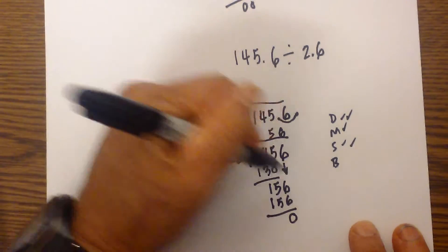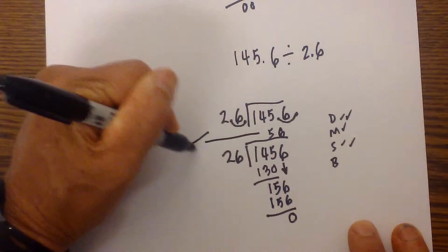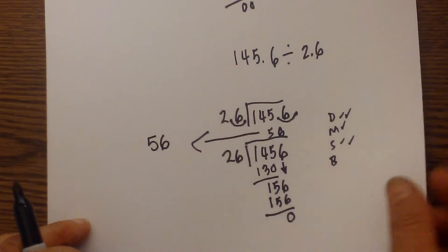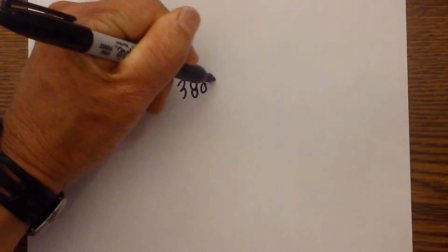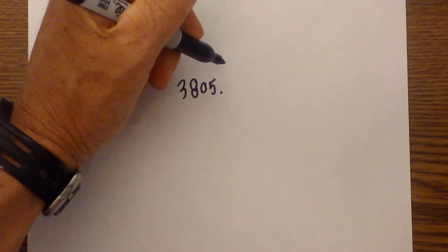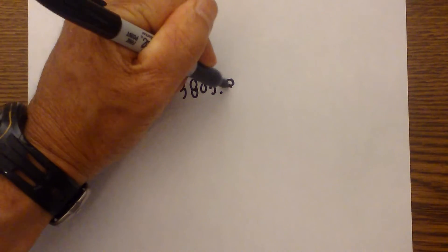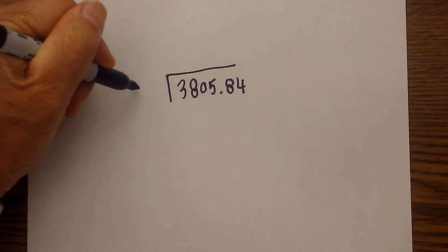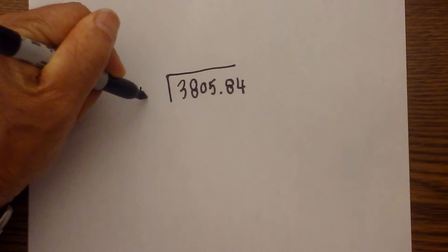So the answer is 56 — let me rewrite that clearly: the answer is 56. Finally, let's work one more. If you have a really big number, hopefully you are beginning to get it. Let's go ahead and work one more: 3,805.84 divided by 45.2.